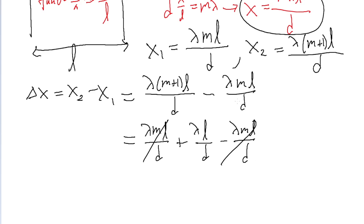So we can see these two terms are equal and they just cancel out, so our whole term, our whole expression delta x, is equal to lambda L over d.